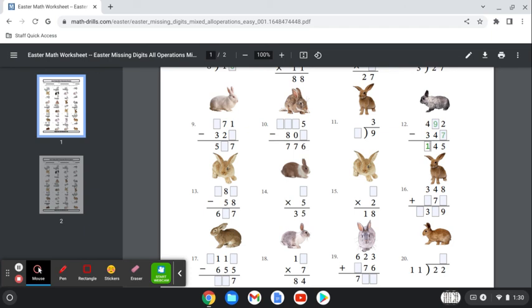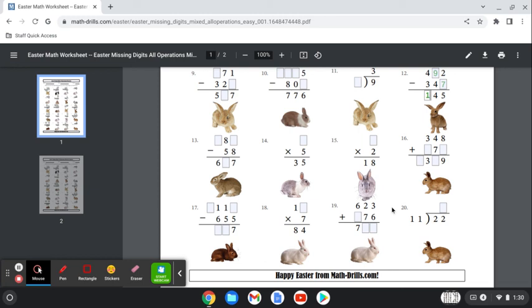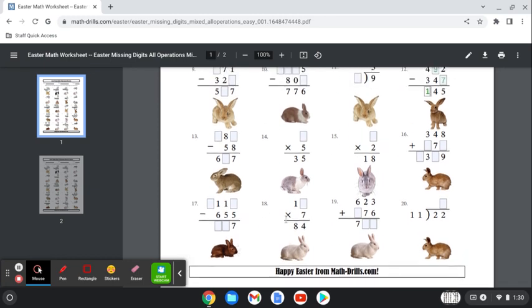So we can double check our answer by doing 492 minus 347. And if it doesn't give us 145, then we didn't do it correctly. And it is correct. But it's not as easy as it looks.